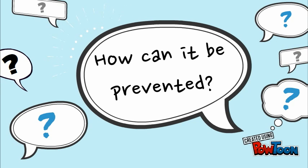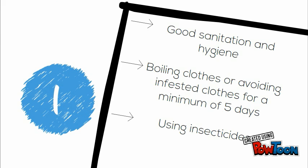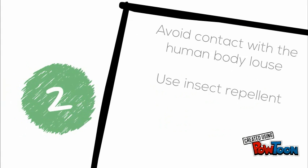How can it be prevented? Good sanitation and hygiene, boiling clothes or avoiding infested clothes for a minimum of 5 days as lice die within 5 days without blood, and using insecticides. Avoid contact with the human body louse and use insect repellent.